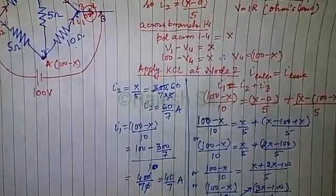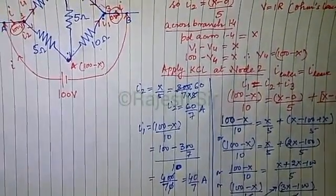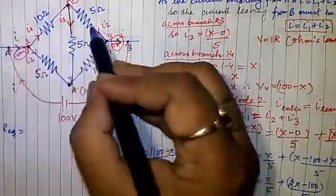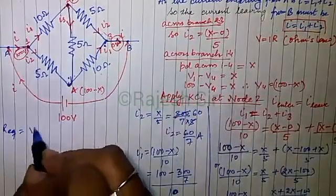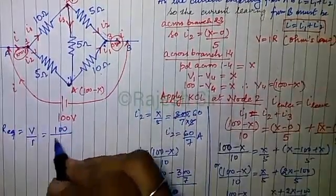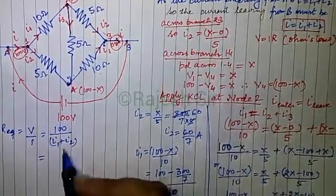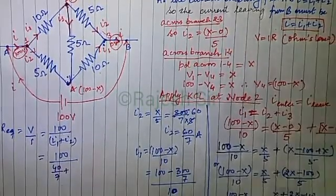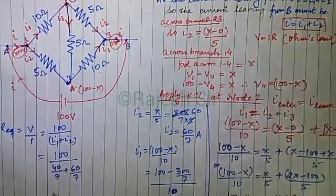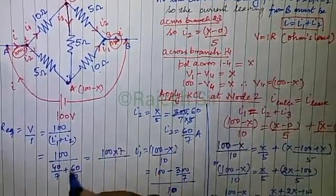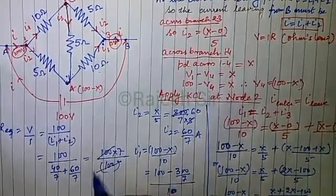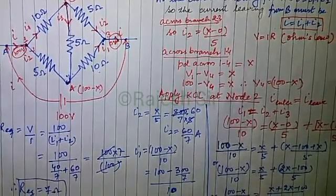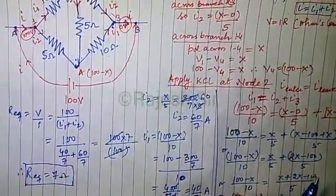My goal is to determine the equivalent resistance across the diagonal. R_equivalent = V / I, where V = 100 volts and I = i1 + i2 = 40/7 + 60/7 = 100/7. So R_equivalent = 100 / (100/7) = 7 ohms. If you master this technique, it will help you solve such problems easily.